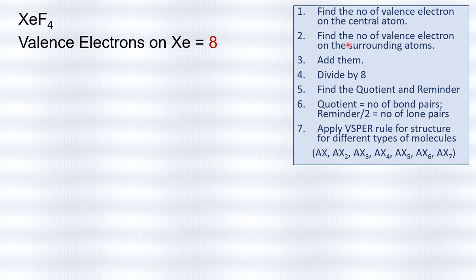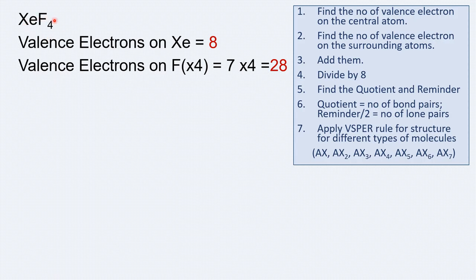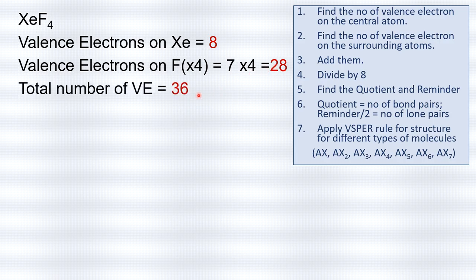The second step is to find the number of valence electrons on the surrounding atoms. Xenon is surrounded by fluorine atoms. As per VSEPR theory, the central atom is electropositive and is surrounded by electronegative species. Halogens have 7 valence electrons, and there are 4 fluorine atoms, so that totals 28. Adding both sets gives 8 plus 28 equals 36.